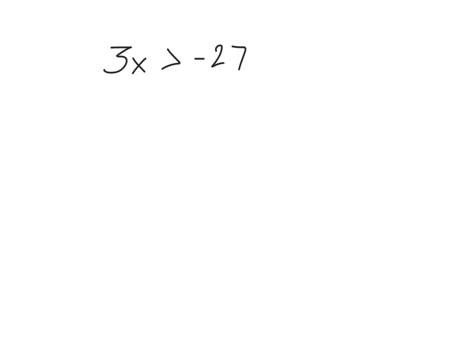Here we have an inequality that says 3x — 3 times x — is greater than negative 27. We're trying to find solutions for x: numbers that we can plug in for x that make this inequality true. To zero in on an exact set of solutions, we use our inverse operations. The multiplication property of inequality says we are allowed to divide both sides by 3 and isolate our variable x. We end up with x is greater than negative 27 divided by 3, which is negative 9.